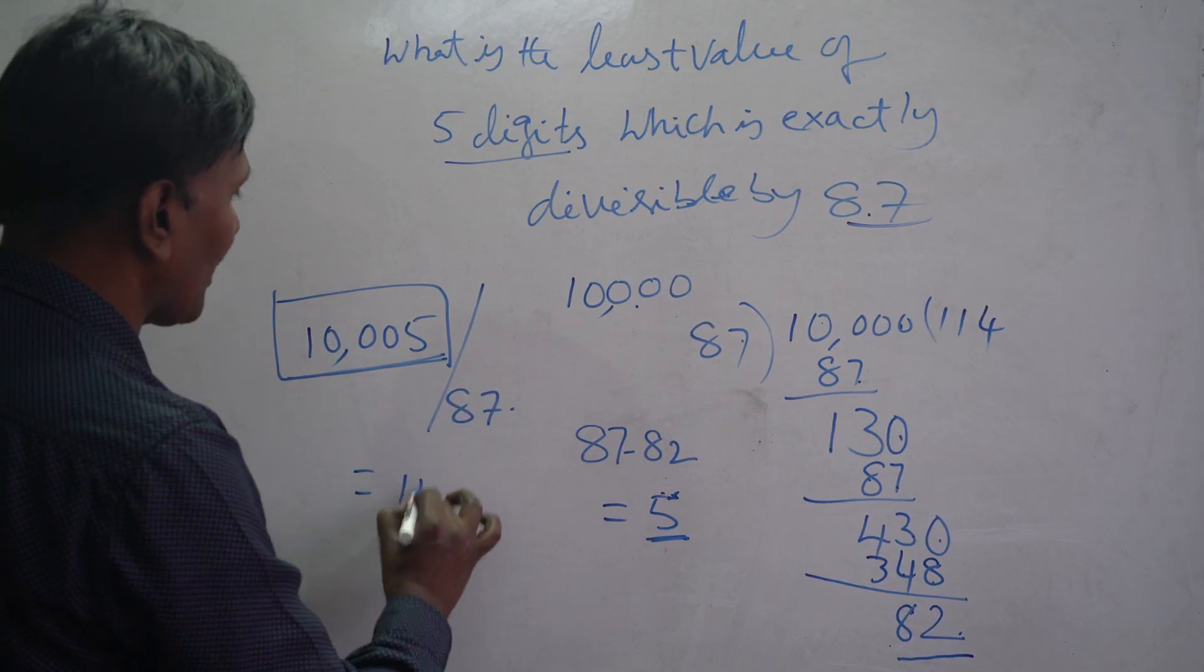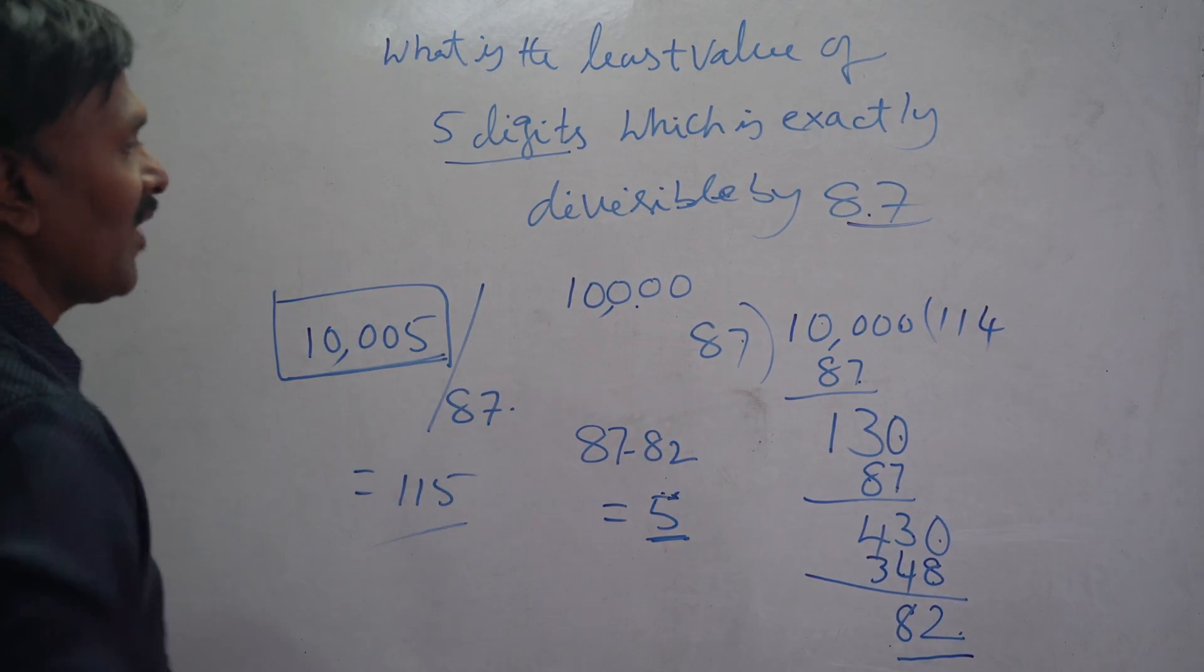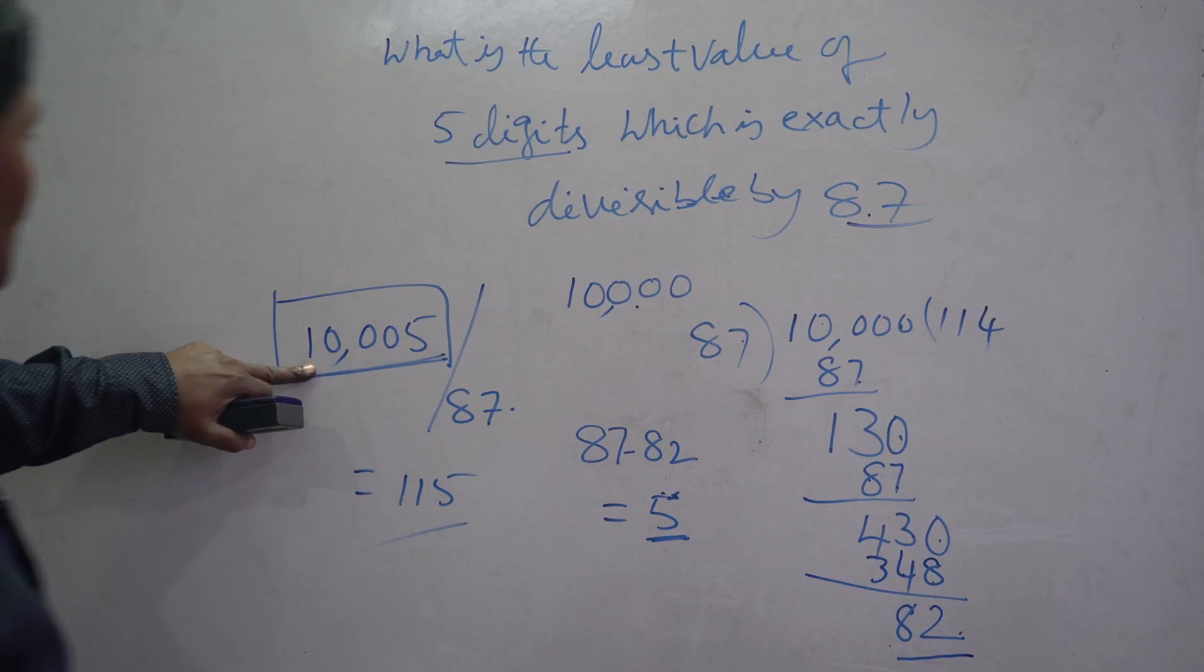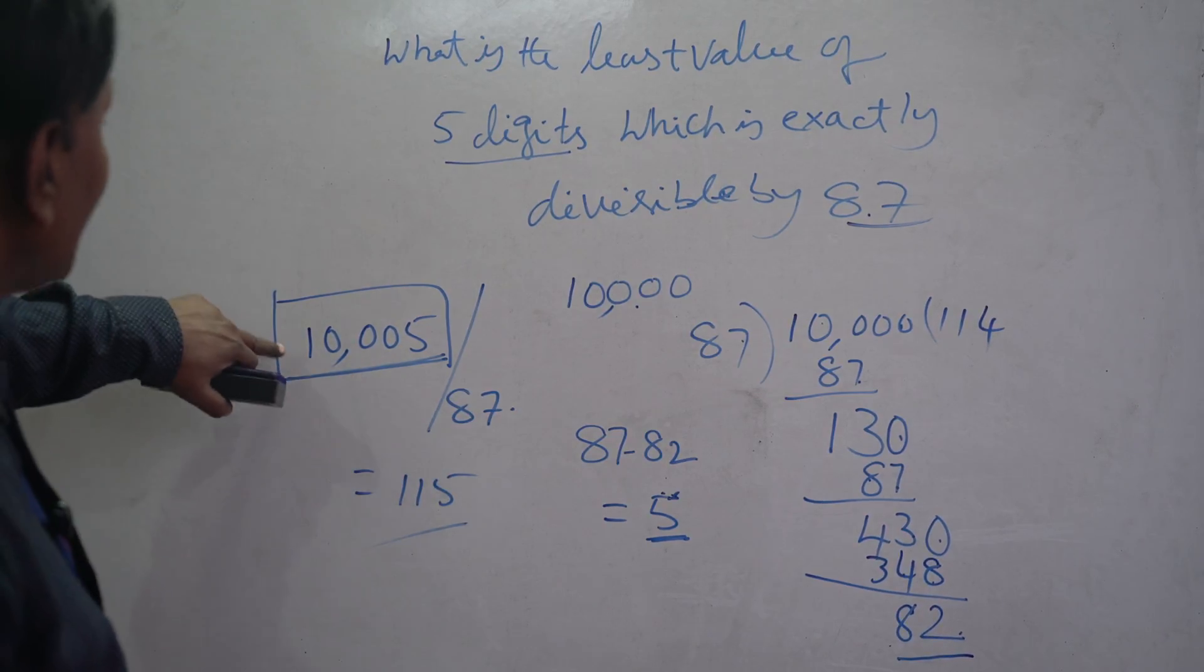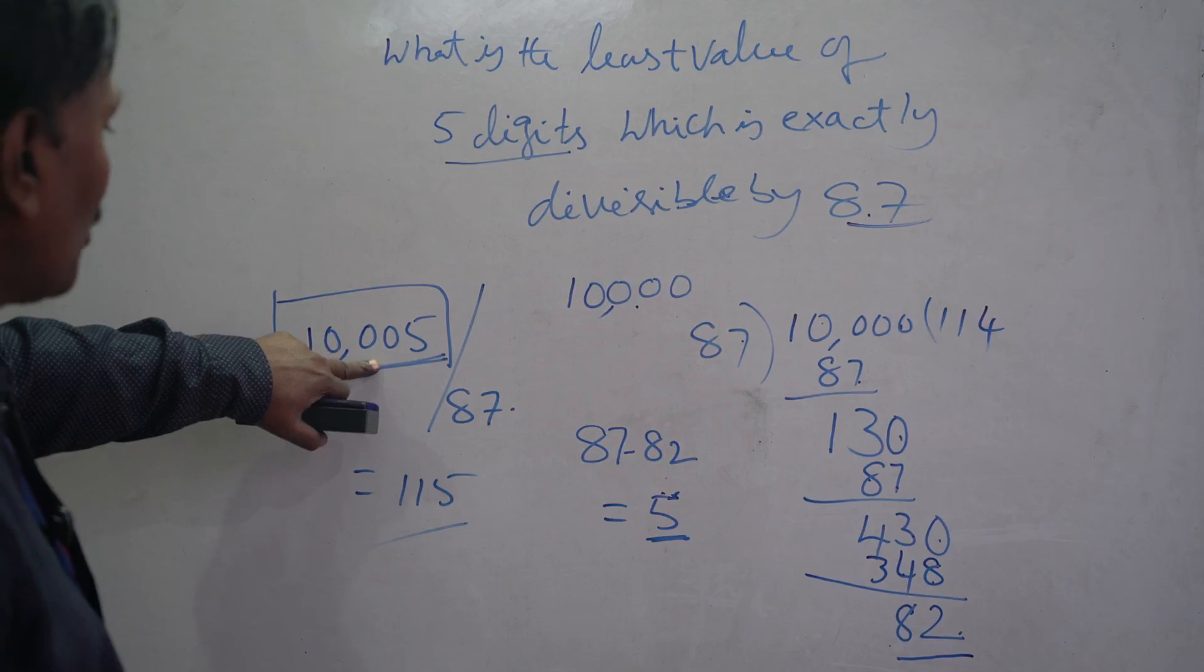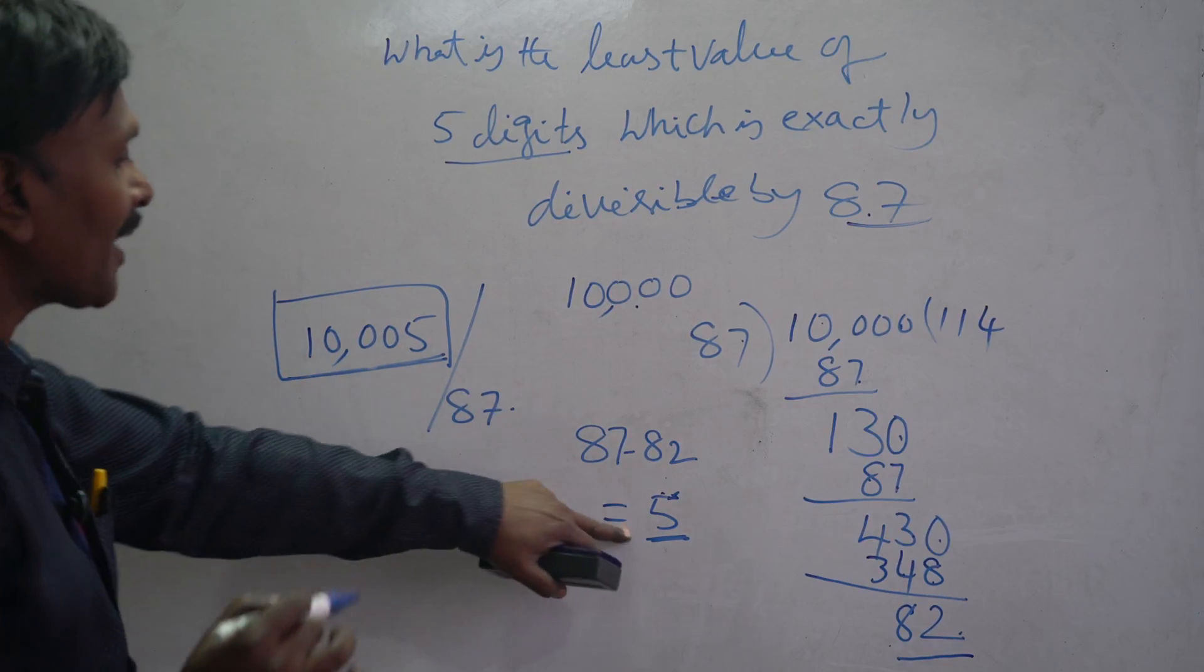115 times it will go, which is exactly divisible by 87. This is the least number.